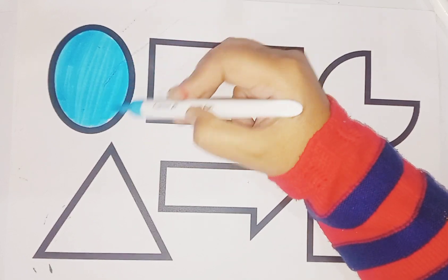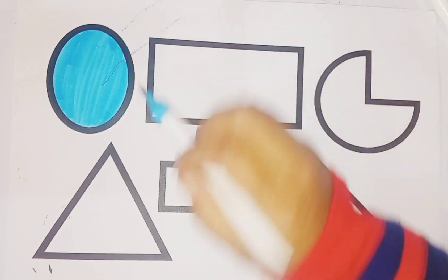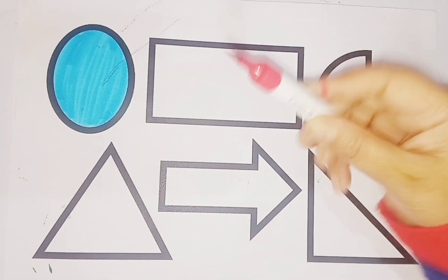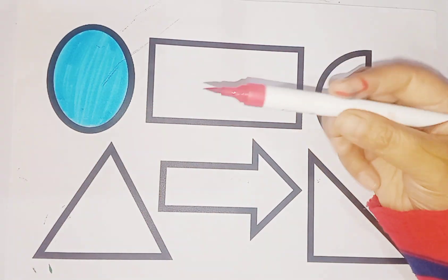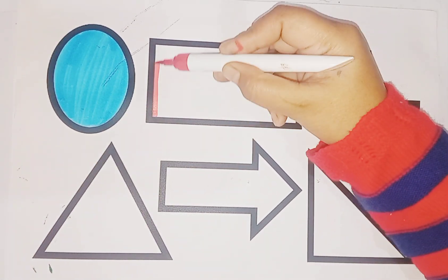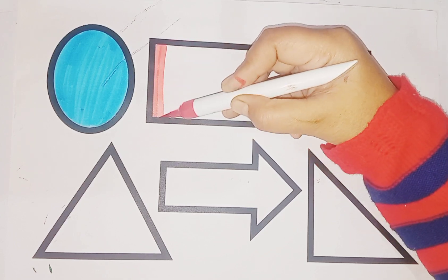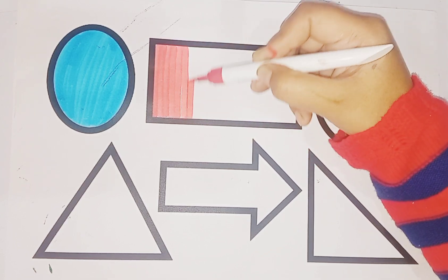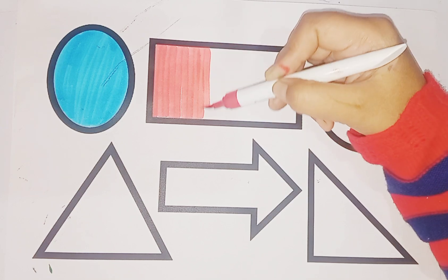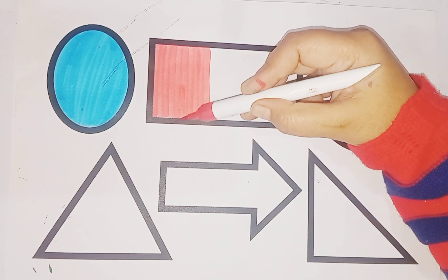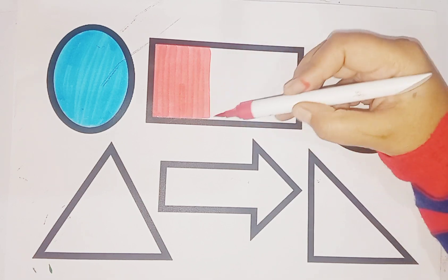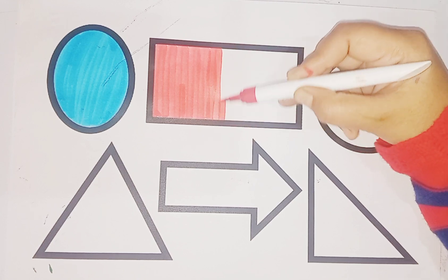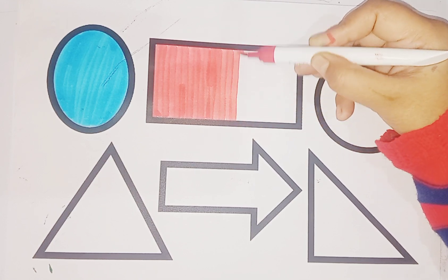The color is sky blue. Color blue oval. Red color rectangle. Which shape is this, kids? This is rectangle shape and the color is red.